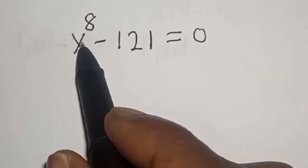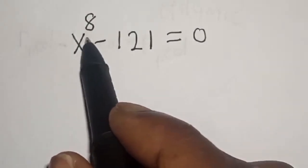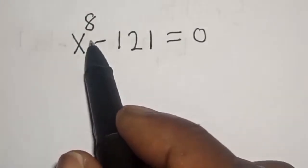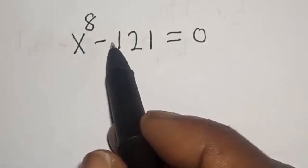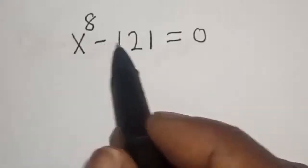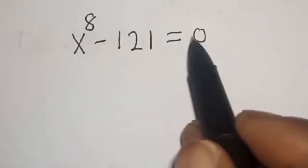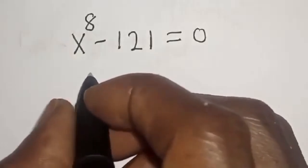Hello. We want to find the value of x from this nice exponential equation: s raised to power 8 minus 121 is equal to 0.